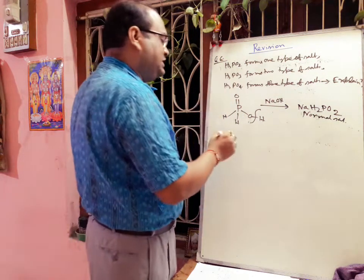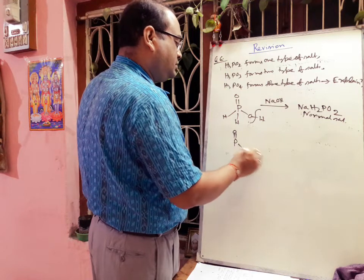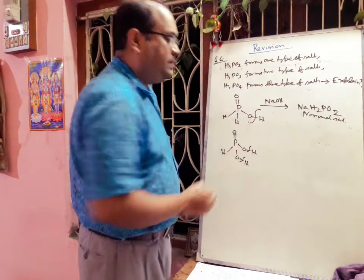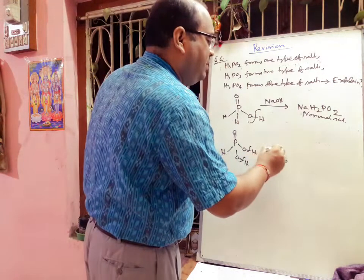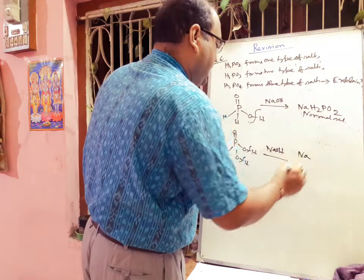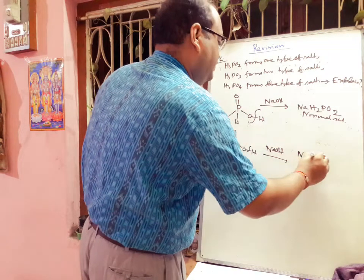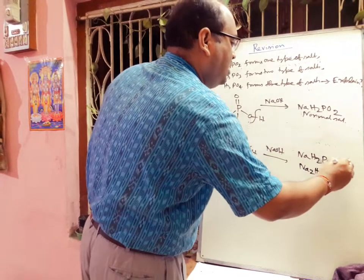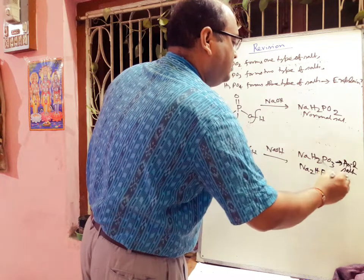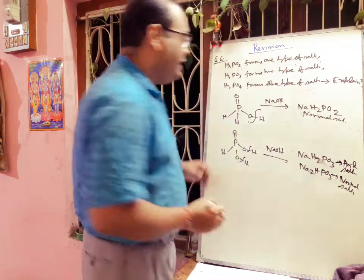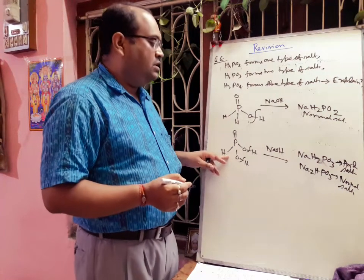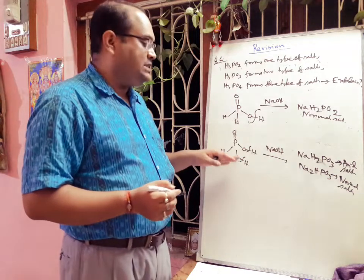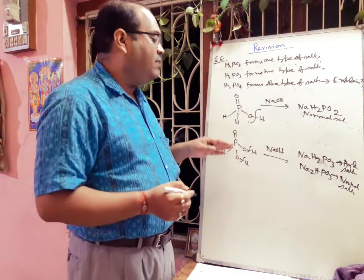In the case of H₃PO₃ (phosphorous acid), two replaceable hydrogen atoms are present. Reacting with NaOH produces two types of salts: NaH₂PO₃ — the acid salt formed by partial replacement of hydrogen — and Na₂HPO₃ — the normal salt formed by complete replacement of both replaceable hydrogens.